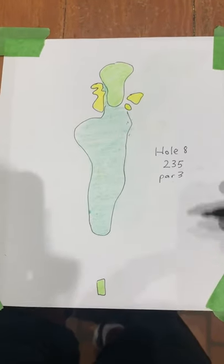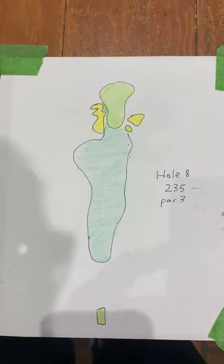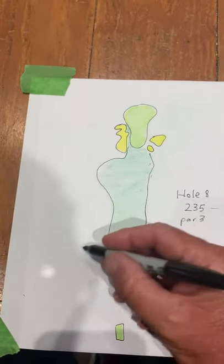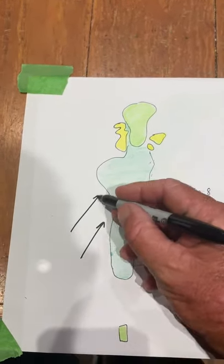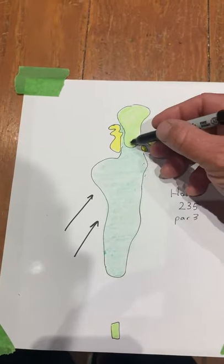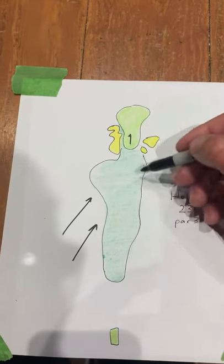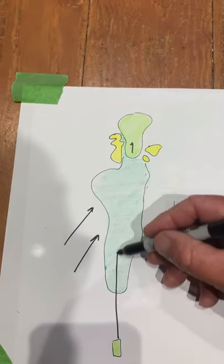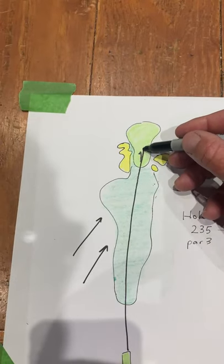Okay, this is hole number eight, long par three, 235 yards. Wind down off the left. Normally speaking, this is the hardest pin, right here in front. There's no room trying to play a shot here. Land on the green, the ball...